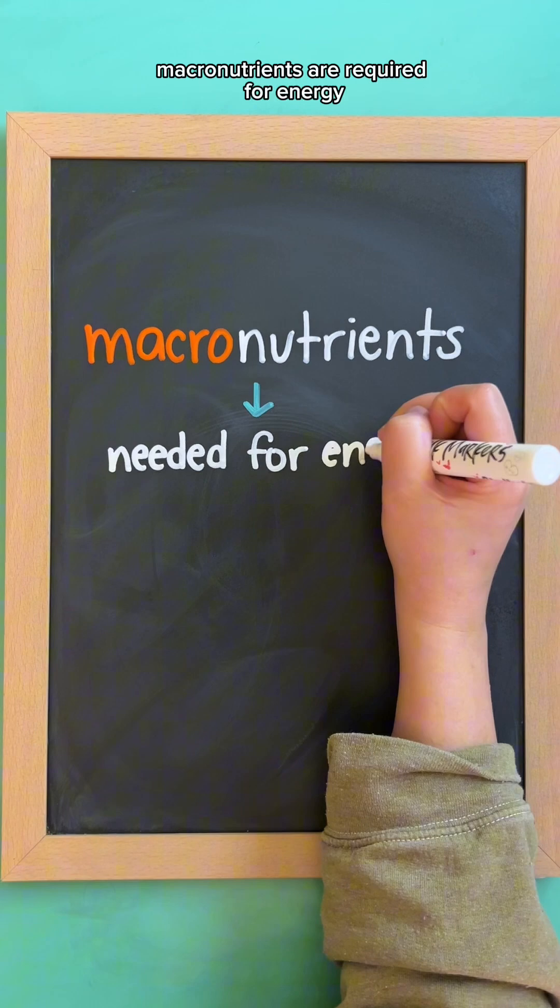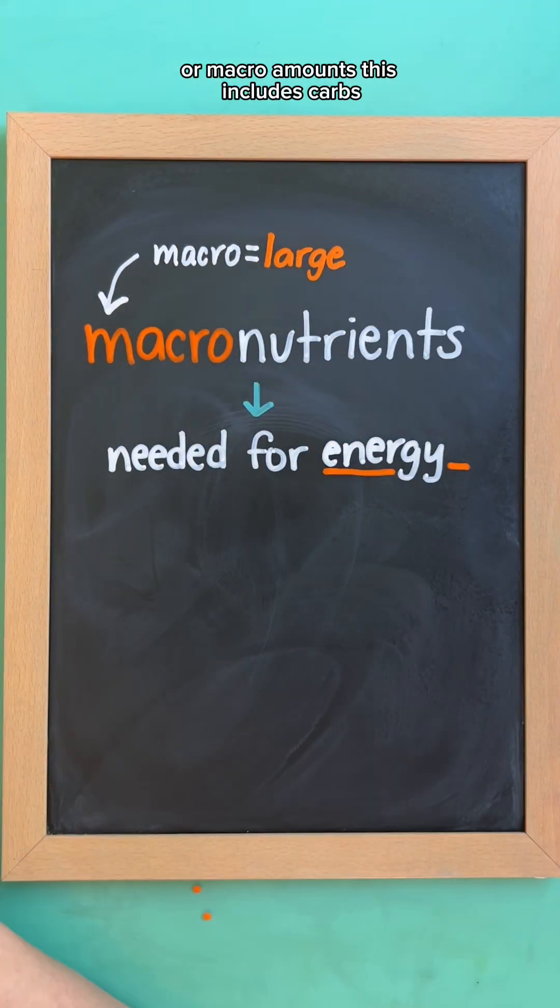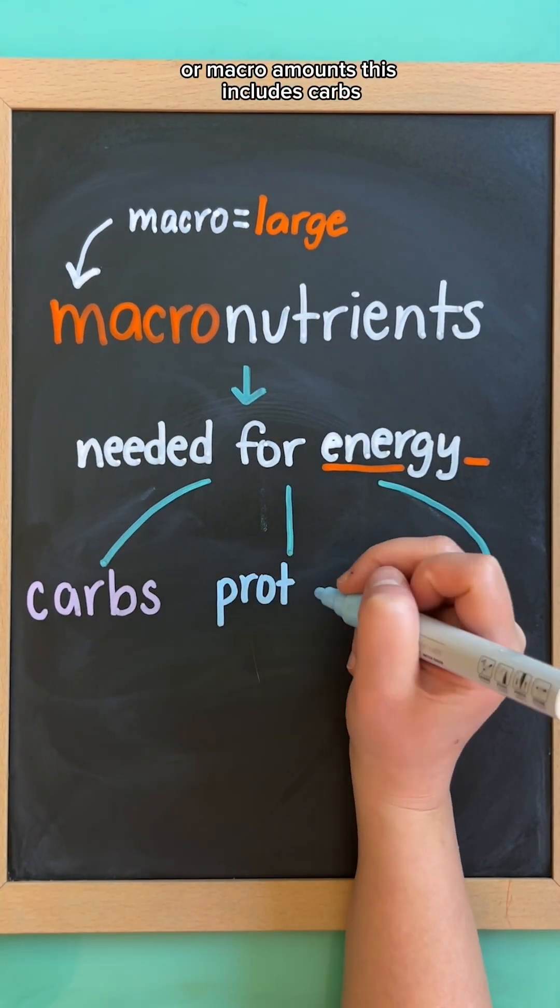Macronutrients are required for energy, and the body needs large amounts of these, or macro amounts. This includes carbs, proteins, and fats.